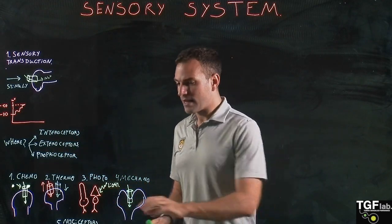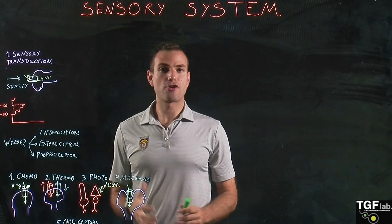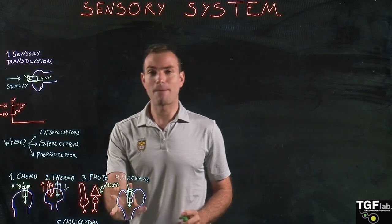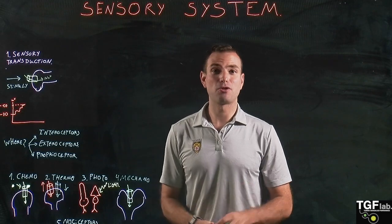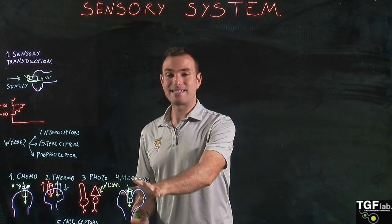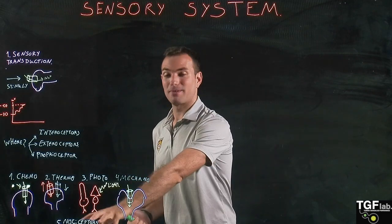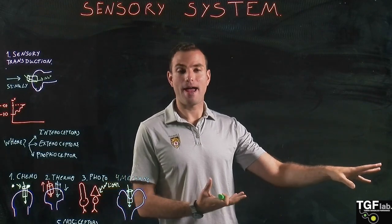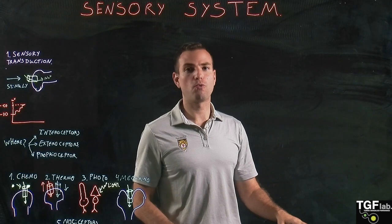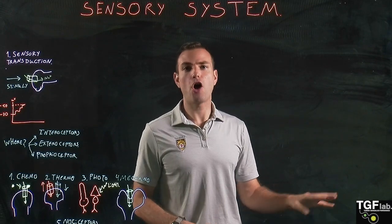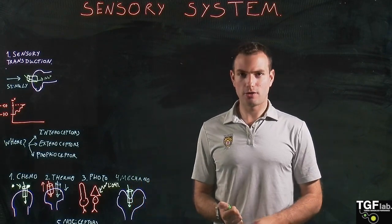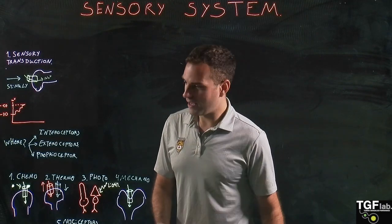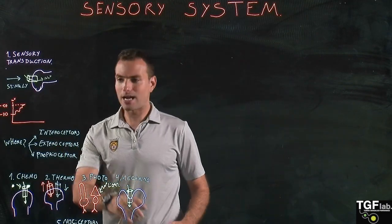Nociceptors are the receptors of pain, and they are a combination of chemoreceptors and mechanoreceptors. For example, someone hitting us hard is an activation of a mechanoreceptor that also produces pain, or placing our hands under very cold or very hot running water also causes pain. This concludes the section on sensory transduction and the different types of receptors.